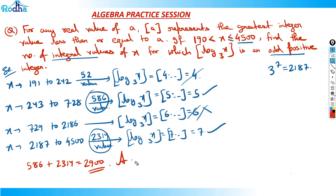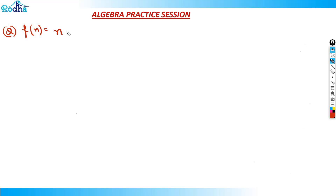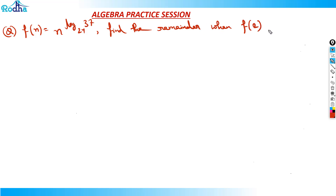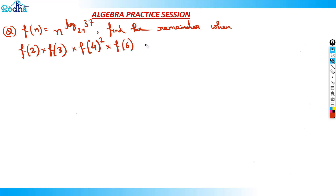That's a good CAT-level question — you have to think on the spot. Now let's do another question. Log is very important; a lot of questions mix log with other algebra concepts. This question says: f(n) = n raised to log of 37 base 24. Find the remainder when f(2) × f(3) × f(4)² × f(6) is divided by 13.